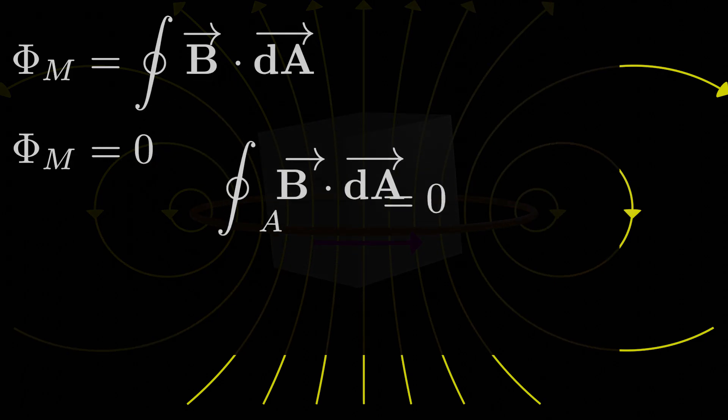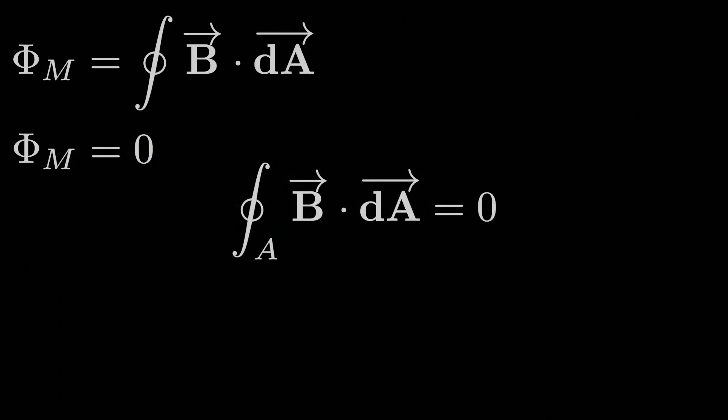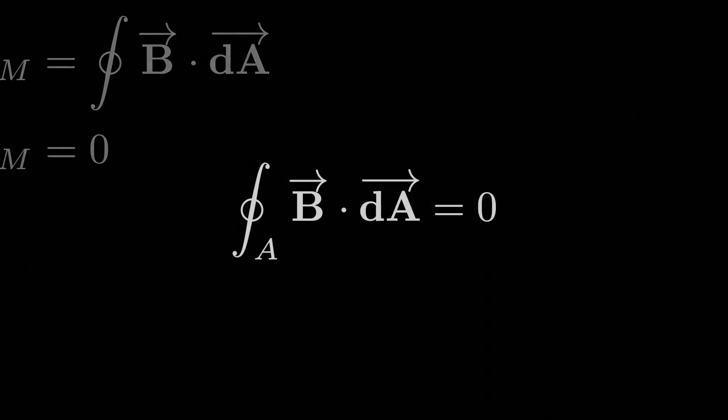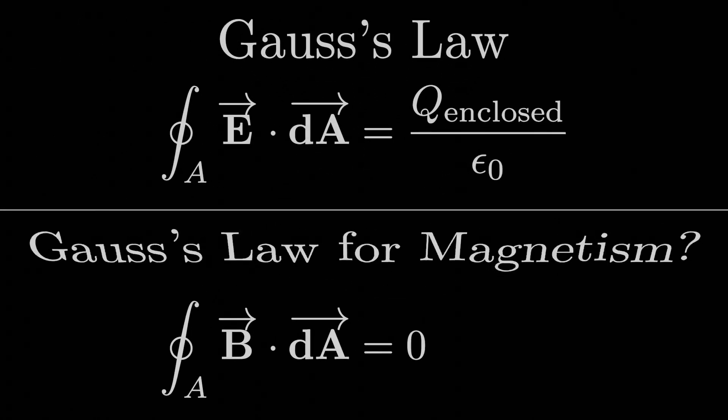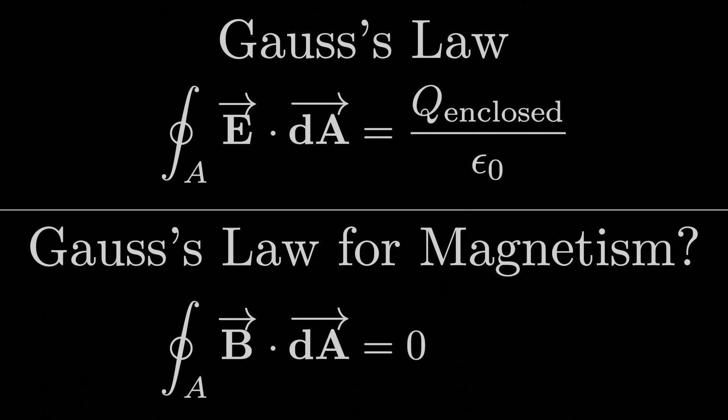So we've settled on a strange equation, the closed surface integral of B dot dA is always equal to zero. This equation doesn't really have a name, so some just call it Gauss's law for magnetism.